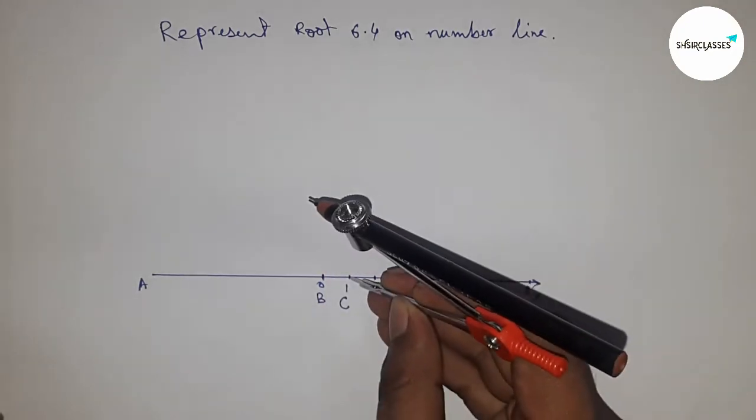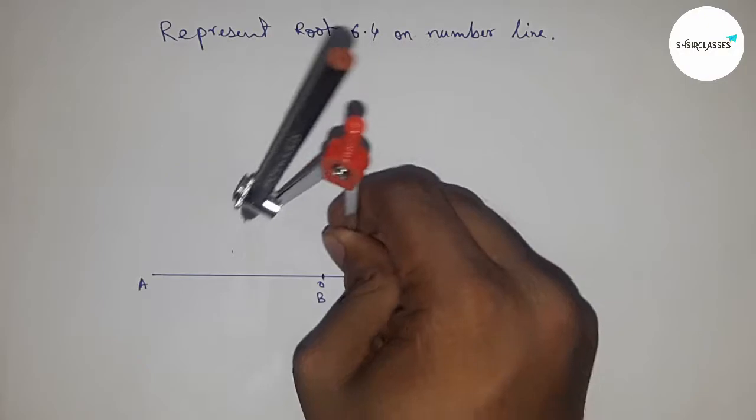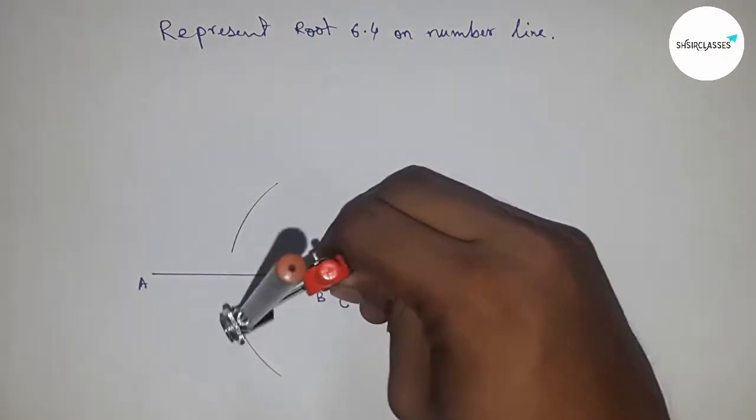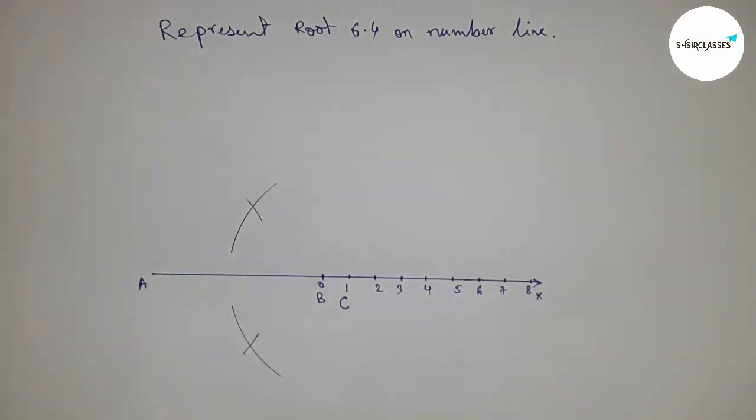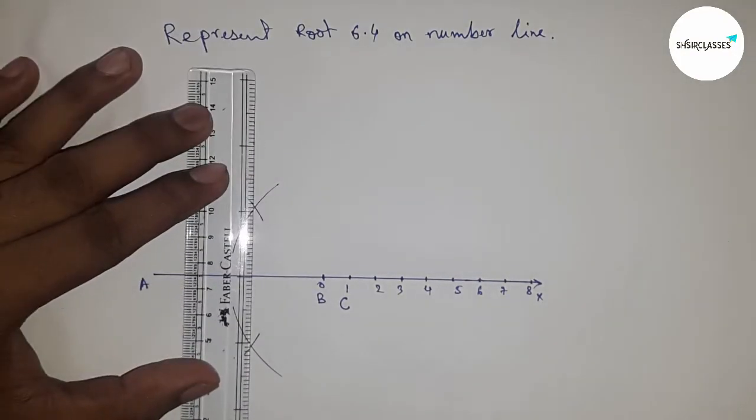Next, we have to bisect the line AC. So taking greater than half of AC and drawing an arc here and drawing another arc here. Putting the compass here with the same length and cutting the arc this way. Next, joining this.